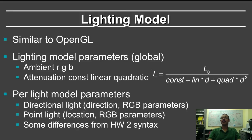Then you have model parameters that are per light. So for a directional light, you have the light source direction and the RGB parameters, the color. For a point light, you have the location. So the real difference is whether the homogeneous coordinate is zero for a directional light or non-zero for a point light. There are some differences from the HW2 syntax, but conceptually this part of the specification is almost exactly the same as in HW2.